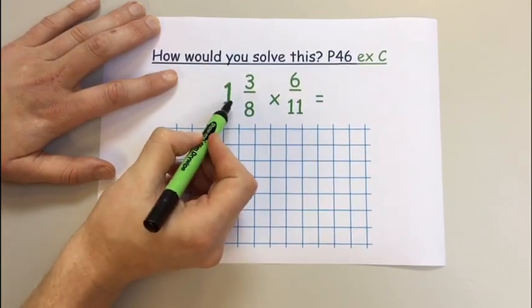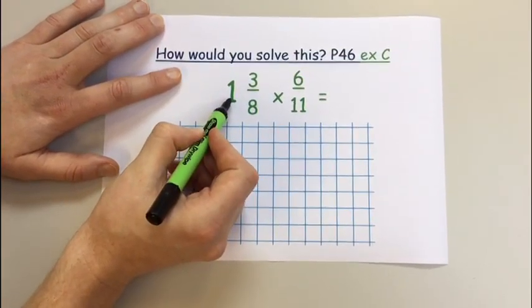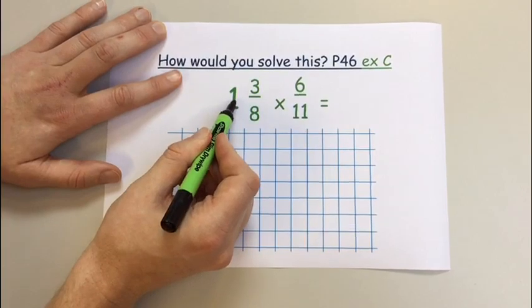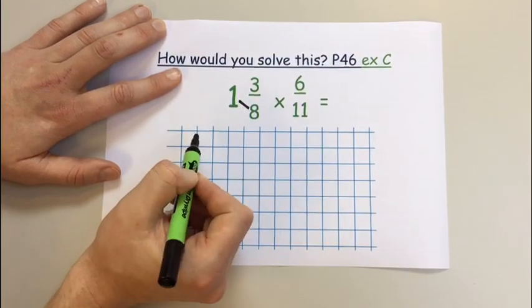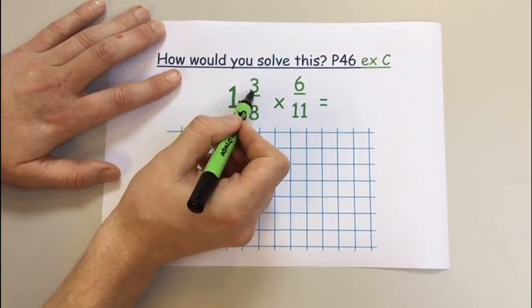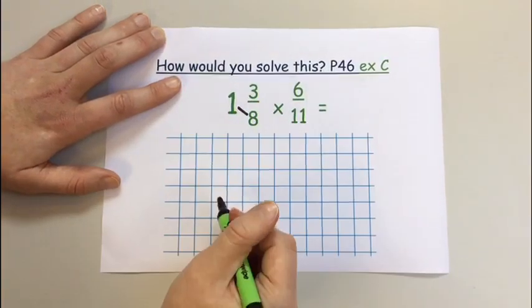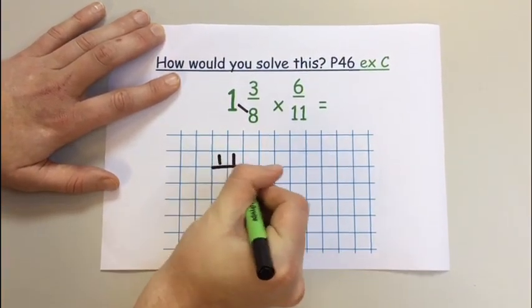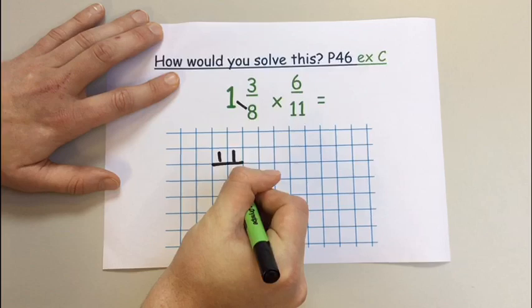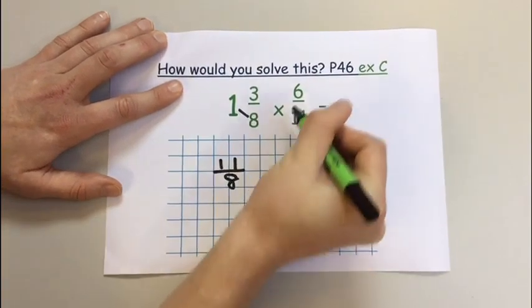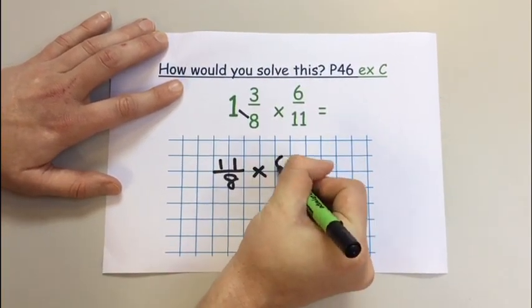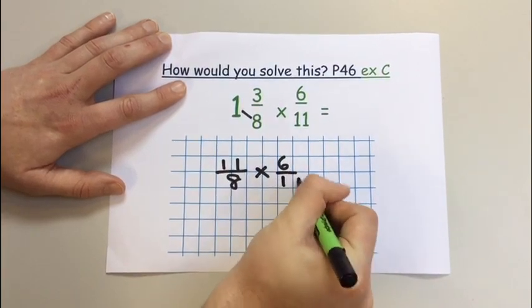So to do this, one whole is the same as 8 over 8, or we can do this by 1 times 8 is 8 plus the remaining 3, 9, 10, 11. So 1 and 3/8 is the same as 11 over 8, and I'll move my proper fraction down, 6 over 11.